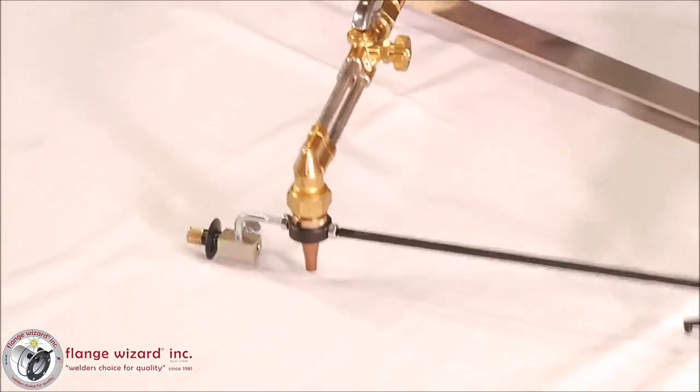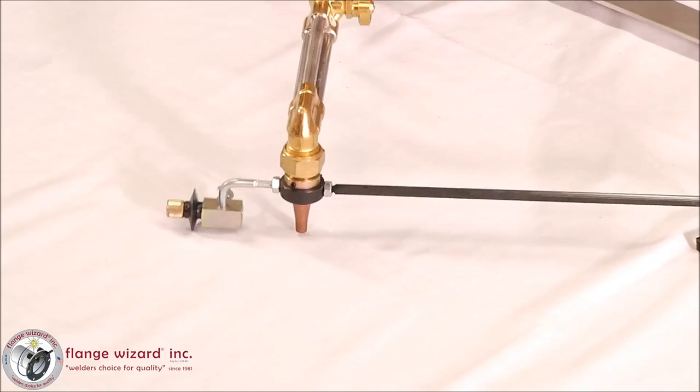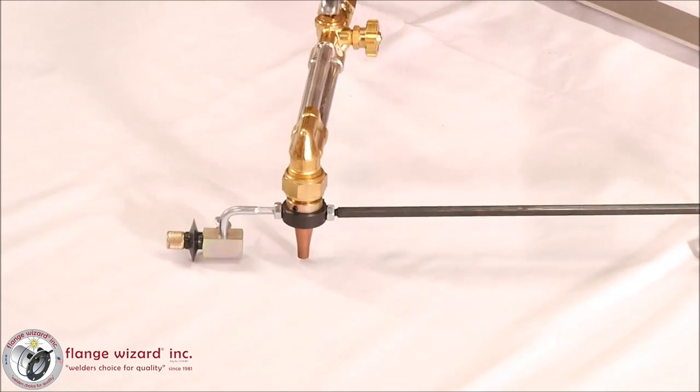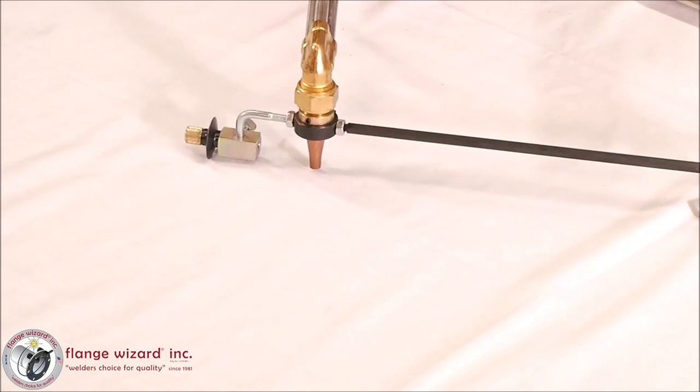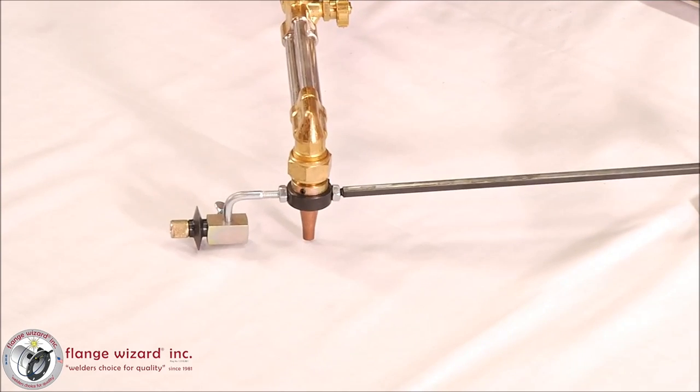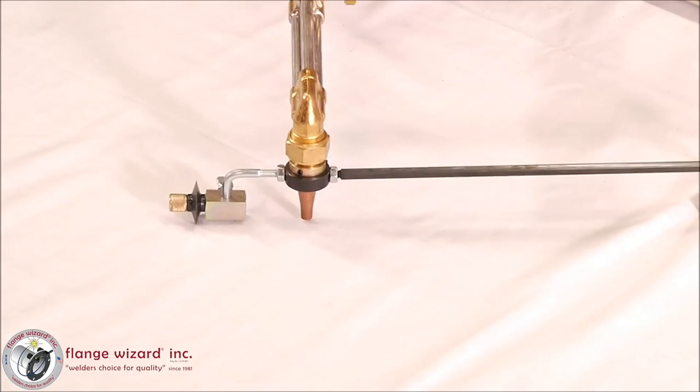Now what you've got is a circle burner. This circle burner right here will go up to about 40 inches and down to 5/8ths. You're seeing it right there with the cut on the inside of the wheel.